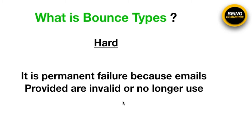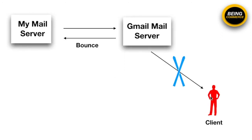For example, my client provided me a wrong or invalid email ID. My mail server sent a message to that invalid email ID, but since it is invalid, the message cannot reach my client and it bounces back to my mail server. This is what is called a hard bounce.